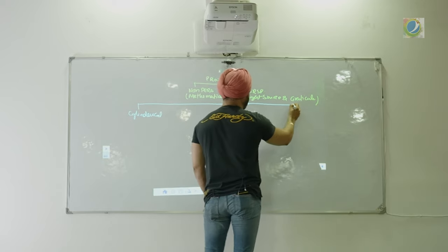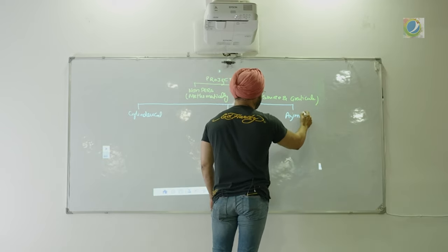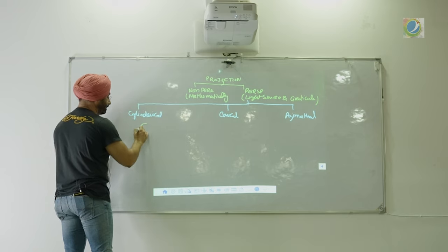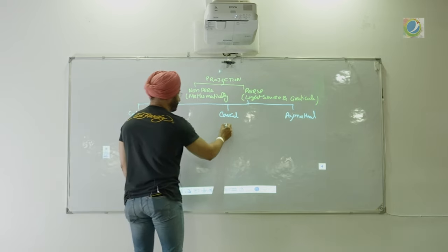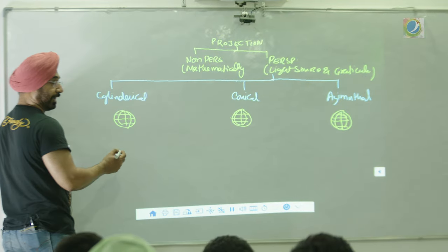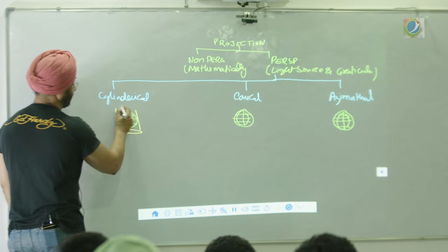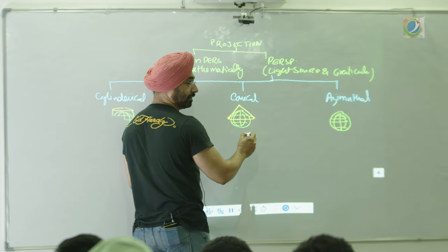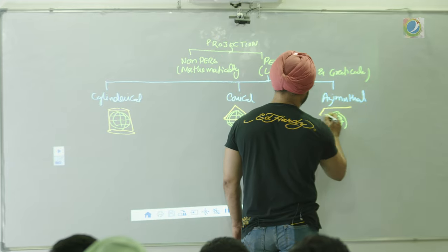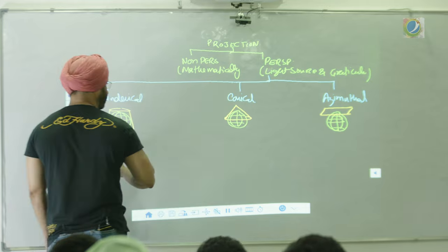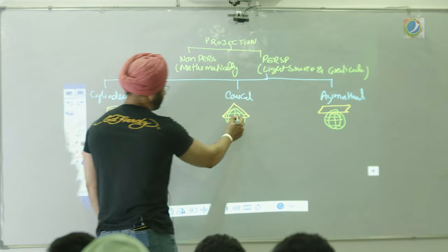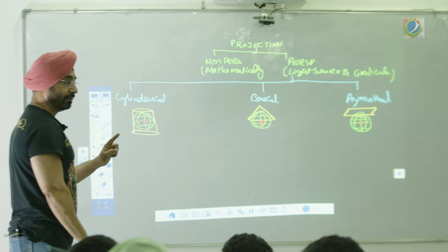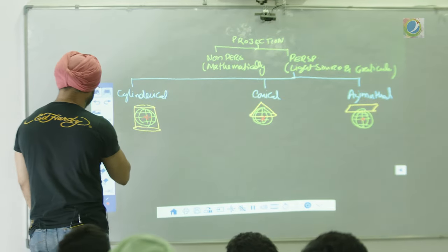We saw cylindrical, then conical, then azimuthal — very simple. If the Earth is there, how I place the sheet determines the projection type. Either I place the sheet like a cylinder — that became cylindrical projection; or I put a sheet like a cone — it became conical projection; or I just put a sheet touching anywhere — that became azimuthal projection. The light source is clear. But then we have to make mathematical corrections.